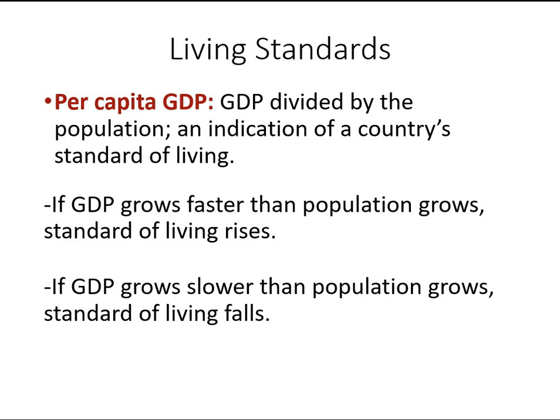If GDP grows slower than the population, the standard of living will fall. For example, with less than 5% of the world's population, the U.S. produces far more output per person than other countries. In contrast, in Ethiopia and Haiti, per capita income is less than $1,000 a year — less than $4 per day — meaning the standard of living in those countries is very poor.